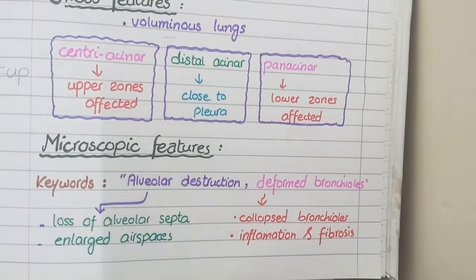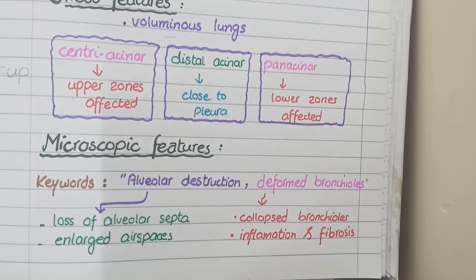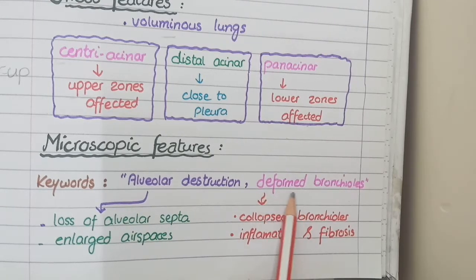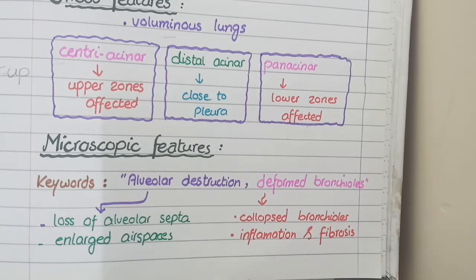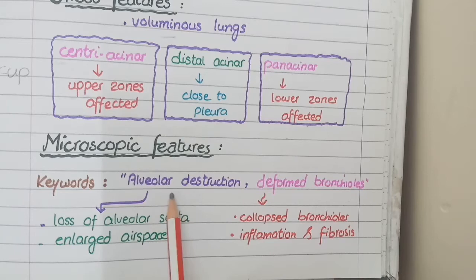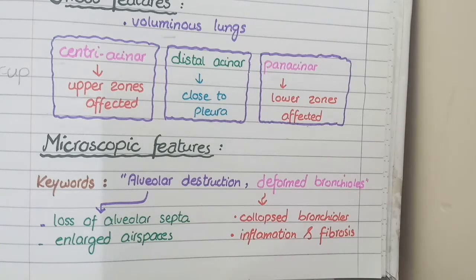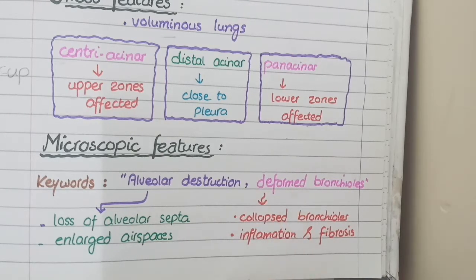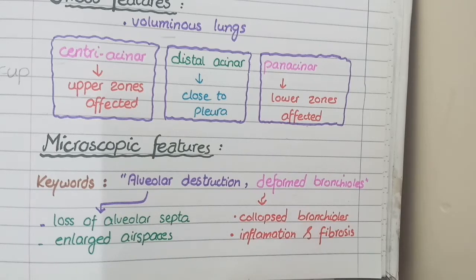Now let's come to the microscopic features of emphysema. The keywords to remember are alveolar destruction and deformed bronchioles. In emphysema, the walls of alveoli are destroyed, and due to this destruction, the elastic support on bronchioles is lost, causing the bronchioles to become deformed. So the keywords for microscopic features are alveolar destruction and deformed bronchioles.